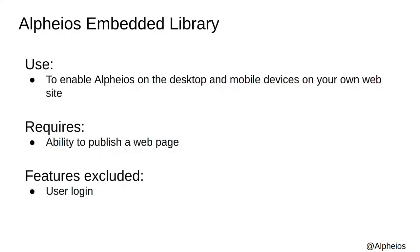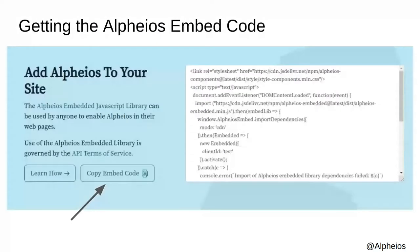The Alpheus Reader is fine if you want to do a quick lookup of a word from a mobile device, or use one of the open access texts we publish. But what if the text you want to read is not there? The Alpheus Embedded Library is a JavaScript library that you can use to enable Alpheus on both the desktop and mobile devices on your own site. It does require the ability to publish a web page. Note one limitation is that right now, user logins are not enabled for third-party sites, though we would consider adding support for this in the future.